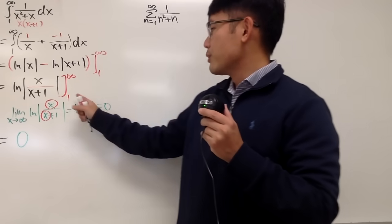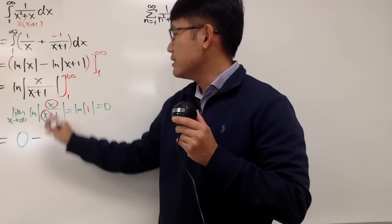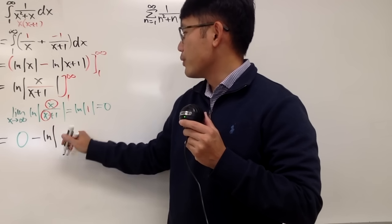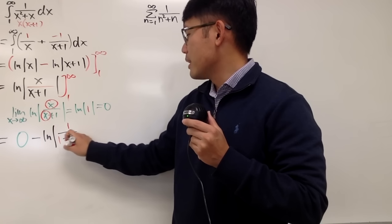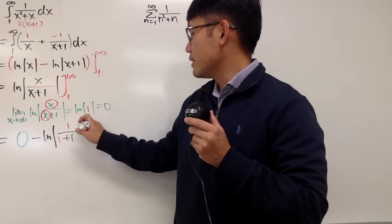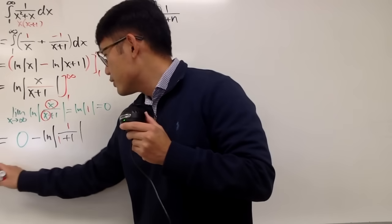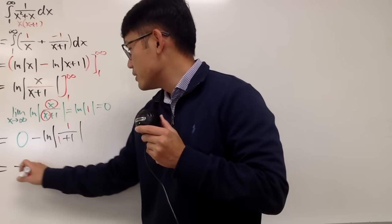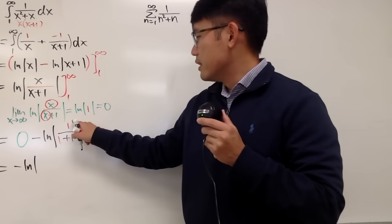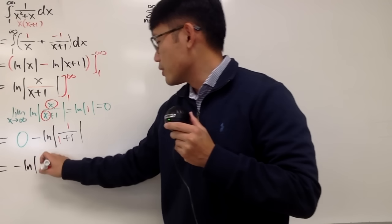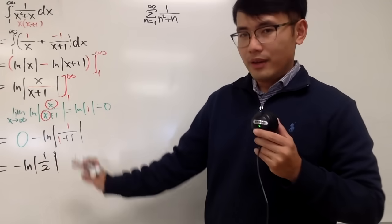Then we have to put 1 into x. So we subtract natural log absolute value of 1 over 1 plus 1. This right here is 0 minus this, which is negative natural log of 1 over 2, so that's negative natural log of one half.